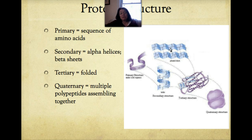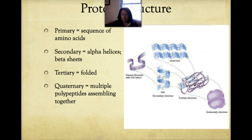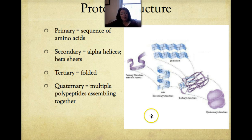The tertiary structure is the three-dimensional folded structure of a protein — the combination of all alpha helices and beta sheets as they become attracted to each other and form associations. There is one more level, quaternary structure, which is only applicable when multiple proteins come together to work as a unit. Several polypeptides fold and then assemble to make one large functional protein — that's quaternary structure.